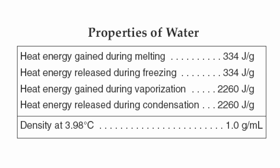This chart primarily focuses on the different phase changes that water goes through. Let's start with the very first one: melting. Melting is going to require a certain amount of heat energy measured in joules — it's going to need about 334 joules per gram to change solid ice into liquid water. Energy in this case is going to be gained from the environment.